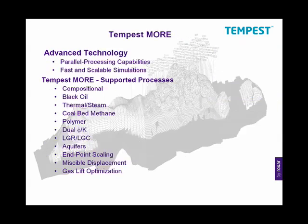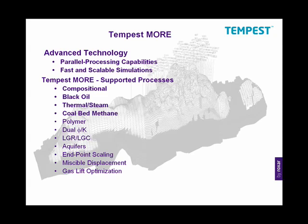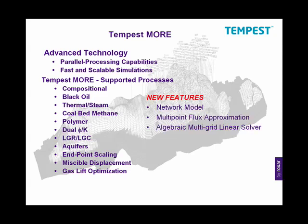Let us first introduce Tempest More, the heart and engine of Tempest. It features parallel processing capabilities for fast and scalable simulations, and supports a wide range of physical processes and systems within a single programme, including compositional, black oil, steam, coal-bed methane and many others as listed here. The latest additions to Tempest include network modelling and multipoint flux approximations, among many others.